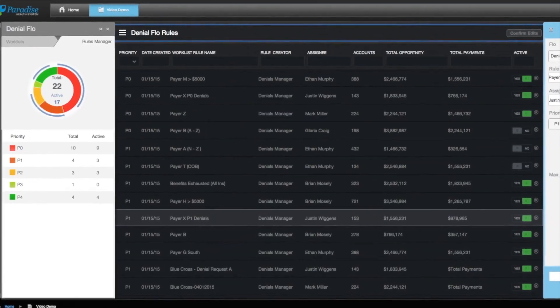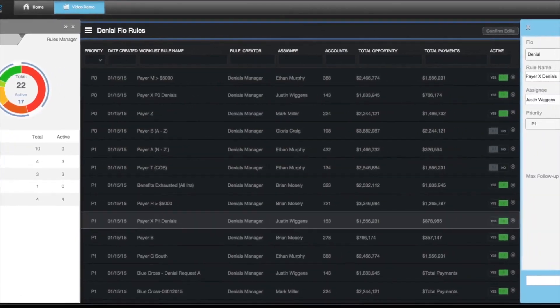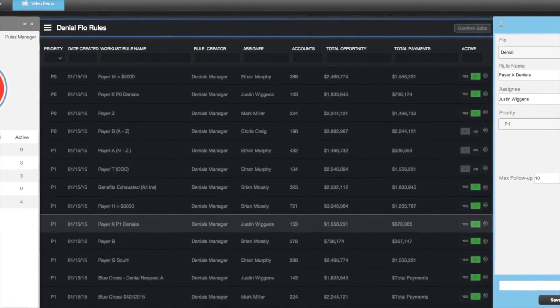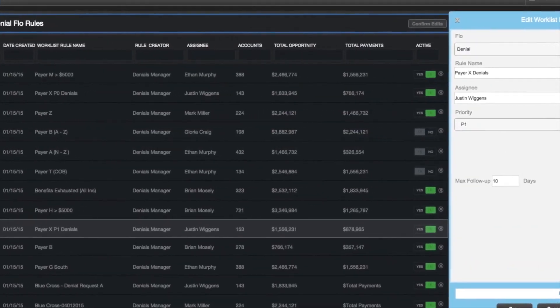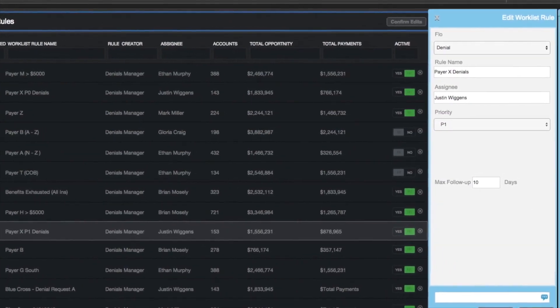She decides the answer is to temporarily refocus a member of her denial staff to make the problem a top priority. Visequate Denial Flow gives her on-the-fly rules management so she can instantly update the business rules.